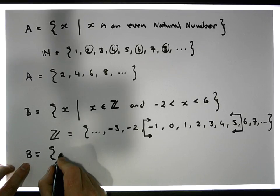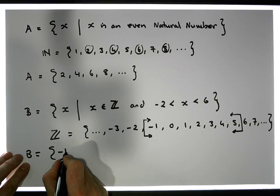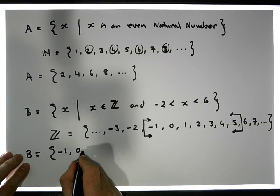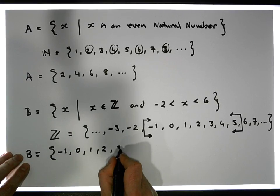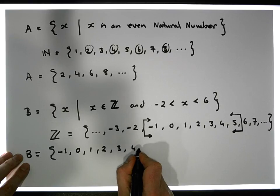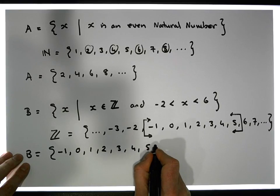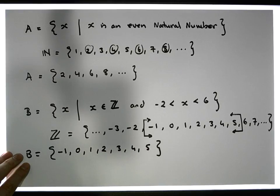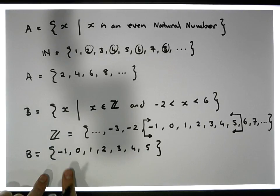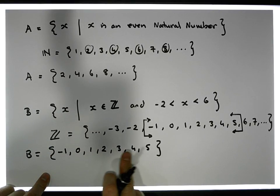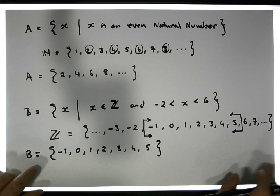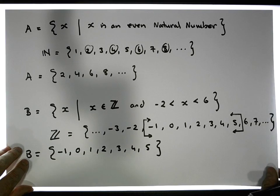In roster notation, the set contains the values minus 1, 0, 1, 2, 3, 4, and 5. Its cardinality — counting 1, 2, 3, 4, 5, 6, 7 — its cardinality is 7.